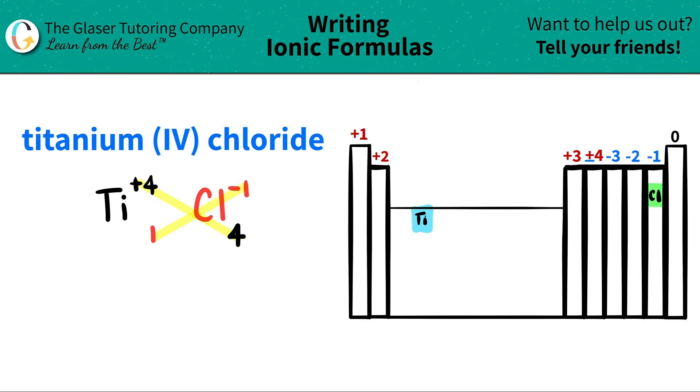So we're ready to write our compound. I have titanium. I only need one of them, so I don't have to write the one here. But when I'm writing the chlorine, I need four of them, so I have to write that four. And now I am done. So titanium (IV) chloride is TiCl4.